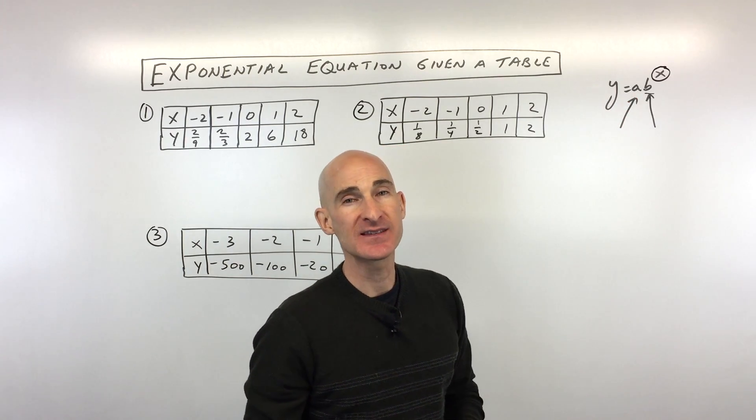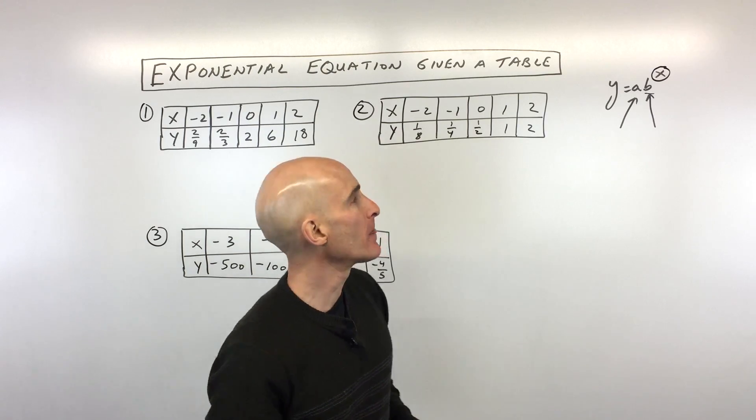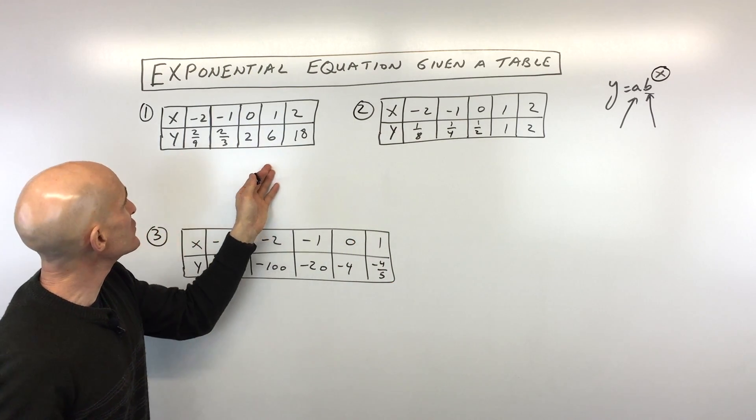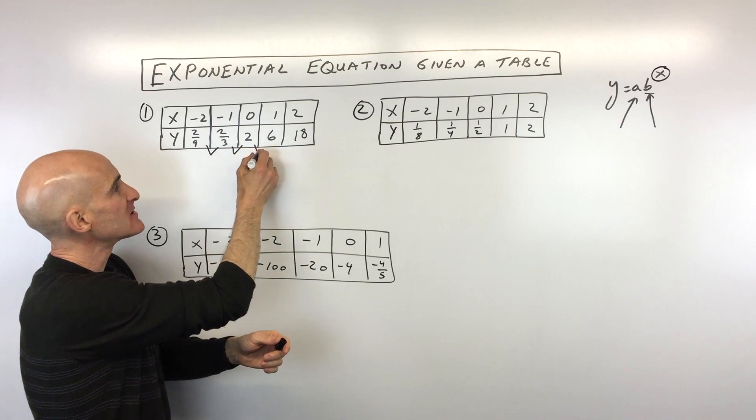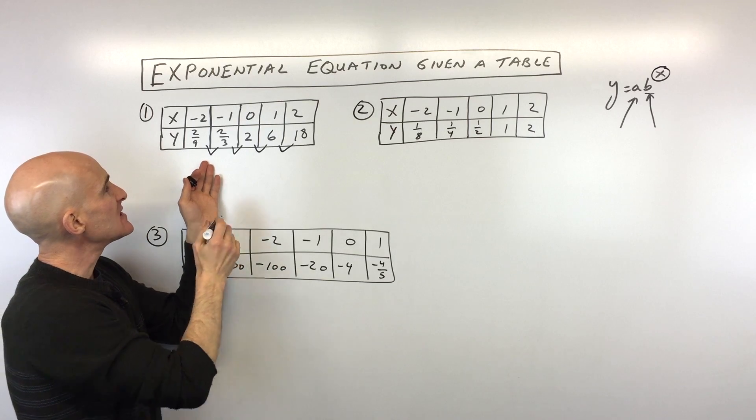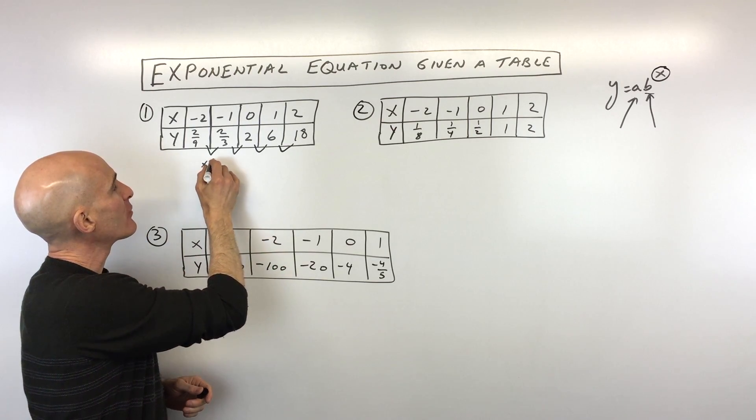The a is our initial condition, that's the y-intercept, you can think of as the starting amount. Let's jump into some examples. In this first example, let's take a look at our y values. What are we multiplying by to get to the next y term? You can see that we're multiplying by three.